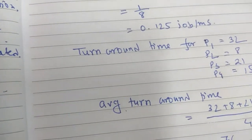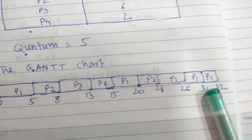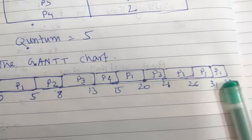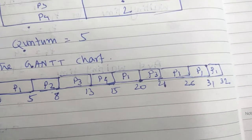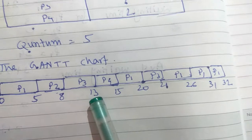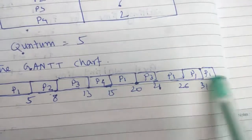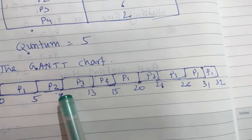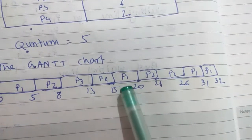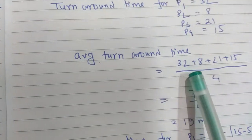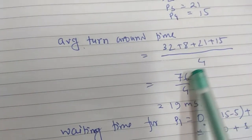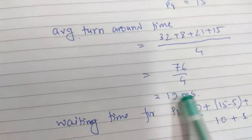Now turnaround time for different processes: P1 completed at 32 milliseconds, so turnaround time for P1 is 32. For P2, turnaround time is 8. P3 is 13 and P4 is 15. Average turnaround time is (32 + 8 + 13 + 15) / 4 = 68 / 4 = 17 milliseconds.